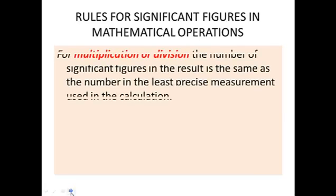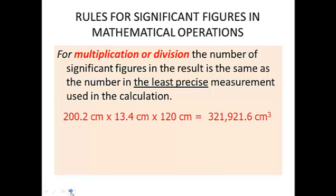The first rule we're going to look at has to do with multiplication and division, and the rule is the same. When we're rounding a number we want to look at the term that has the least precise measurement with the fewest significant figures.